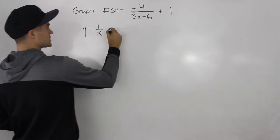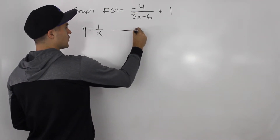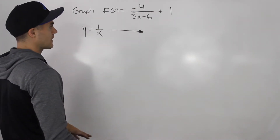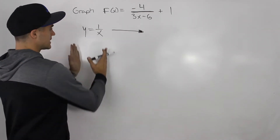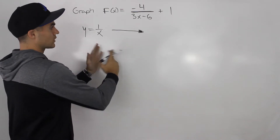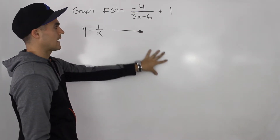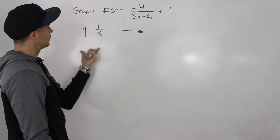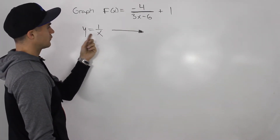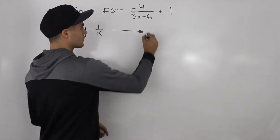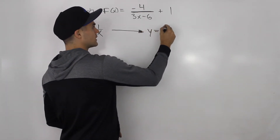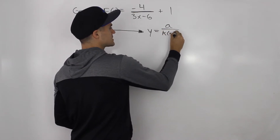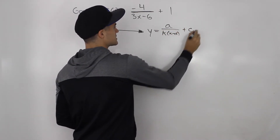We're going to transform the function 1/x into our given function and then graph it. We'll take a table of values and use the mapping formula to get our new table of values. In general, when you transform y = 1/x, the function will look like a / (k(x - d)) + c.